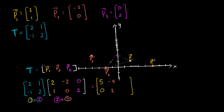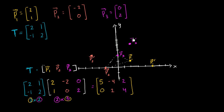Finally, let's look at P3. Two times zero is zero, plus one times two — so zero plus two, or just two. And then negative one times zero is zero, plus two times two is four. So we get the point two comma four, which is right over here. So if this is P3 right over here, this is P3 prime.